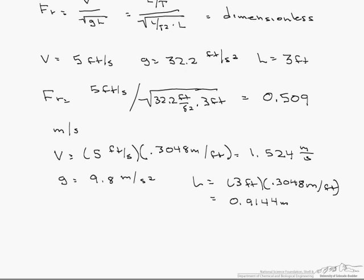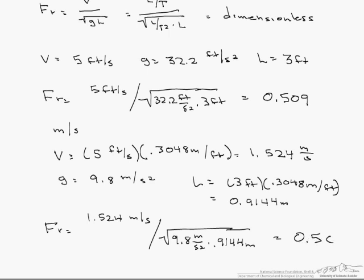The Froude number equals 1.524 m/s divided by the square root of 9.8 m/s² times 0.9144 m, which equals 0.509. This Froude equation is general and can be used for any system of units.